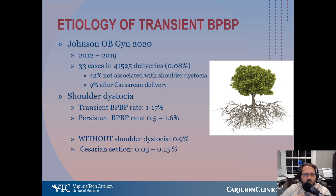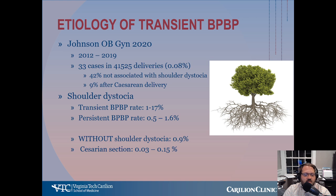The etiology has been explored in the literature. Johnson et al. wrote about 33 cases of transient brachial plexus palsy in over 41,000 deliveries. They found that about 42% were not associated with shoulder dystocia; a few were even in cesarean deliveries. Shoulder dystocia alone has a transient brachial plexus palsy rate of anywhere 1 to 17%, but a persistent or permanent brachial plexus palsy rate of 0.5 to 1.6%. Without a shoulder dystocia the rate is much lower, and cesarean section is actually protective against brachial plexus palsies.